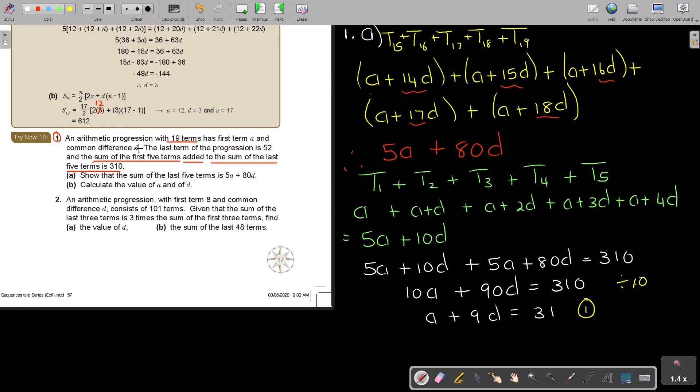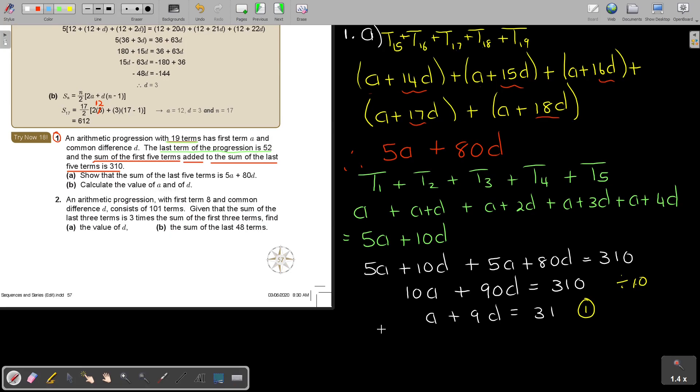Now, I need still another equation because there's two variables. But, let's read always. If you stop, start reading the question again and see if you missed information. The last term, so here is the other, that's 19 terms and the last term is 52. So, basically, it's saying to you that T19 is equal to 52. So, it's going to be A plus 19 minus 1, so 18D equals 52. And that will be my equation 2.